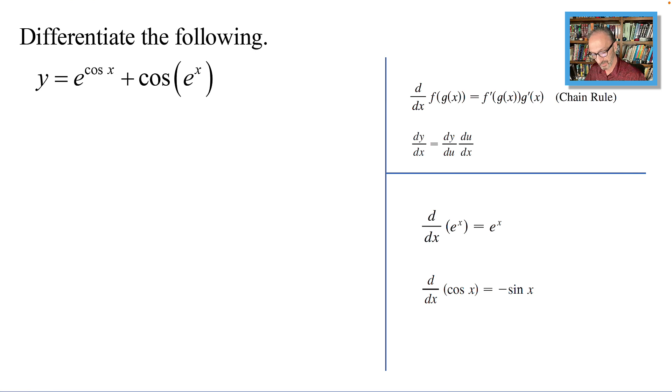One of the main rules that we will be using for this problem is the derivative of e to the x is the same as e to the x, and the derivative of cosine x is minus sine x.